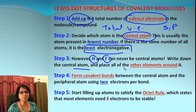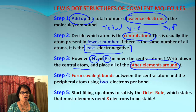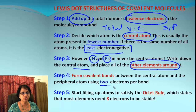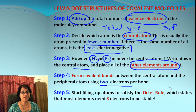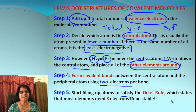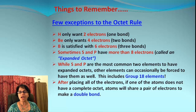Once we figure out which atom is the central atom, we write that and put all the remaining elements around it. Next, we draw a covalent bond between the central atom and every peripheral atom — we can either draw a bond or show two electrons per bond. After that, we check the count of electrons, and using the octet rule, we start satisfying every element around the central atom until they all have eight. Any extra electrons go on the central atom.